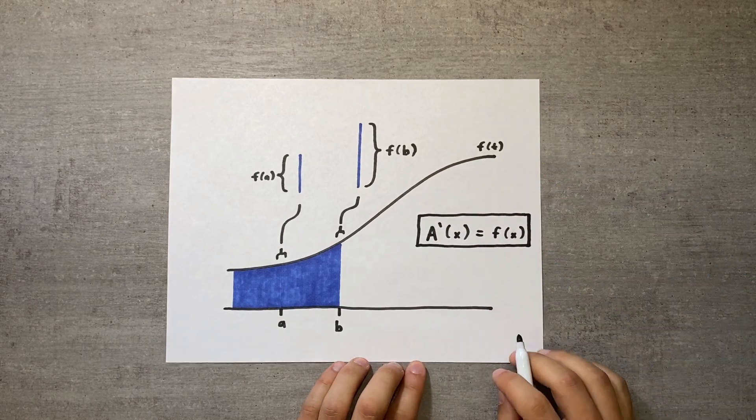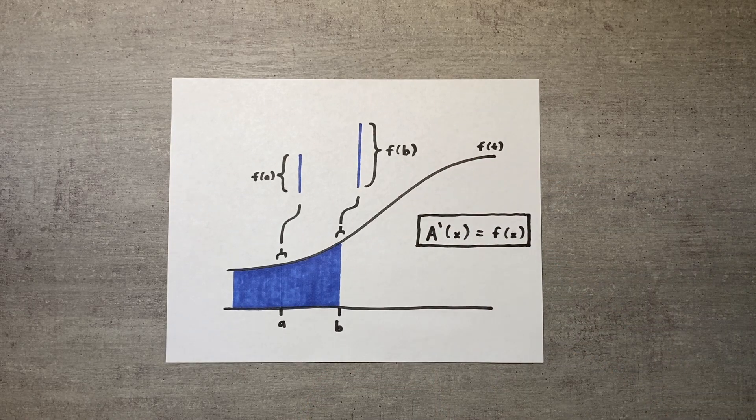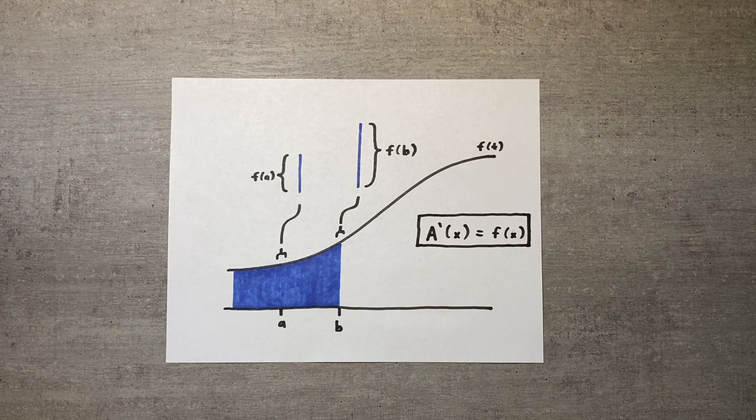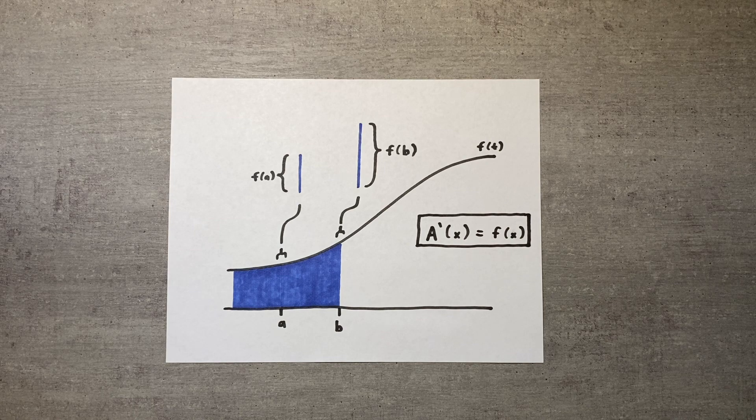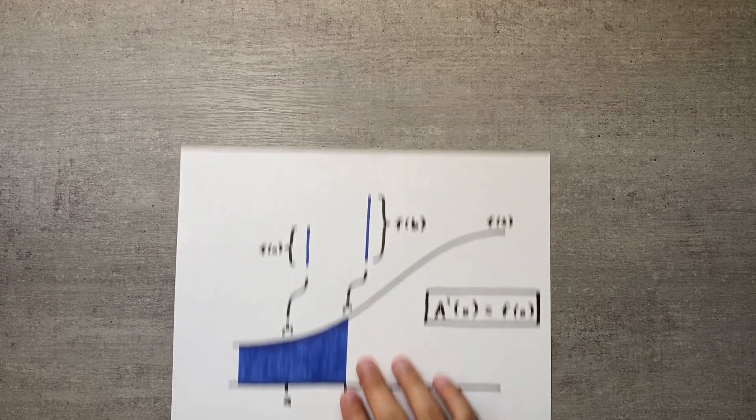The downside of this argument is that it's not very rigorous. It visually shows how the height of the function determines the area's rate of growth, but never once actually mentions the derivative. Let's see if we can make this proof more rigorous by applying the definition of the derivative, finding the difference in area for a small change in x.